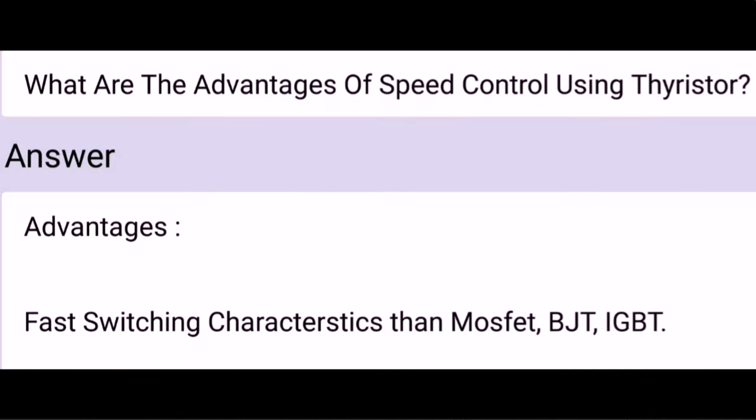What are the advantages of speed control using a thyristor? Thyristors have fast switching characteristics compared to MOSFETs, BJTs, and IGBTs. They are also low cost and offer higher accuracy.